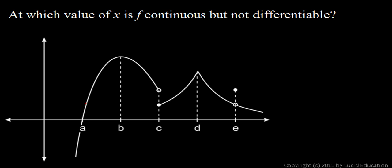At x equals a and at x equals b, the function is continuous, but it's also a smooth curve through those points. It is differentiable there.